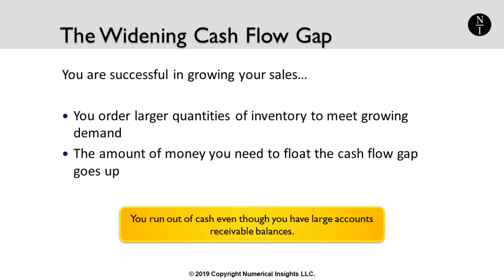As your business becomes more successful, customer demand increases. That's obviously good news, but rapid growth is a scenario which catches many smaller businesses by surprise. If you're selling products, you begin to buy more inventory to cover the larger demand. That ties up more cash in inventory, and the amount of cash you need to cover the time between the initial outlay and receiving cash from sales gets larger and larger. A business can then run out of cash, even though it has a large amount of money owed to it from past sales. Being able to show the analytics behind this situation can help you secure the proper business line of credit from your bank to bridge the cash flow gap.